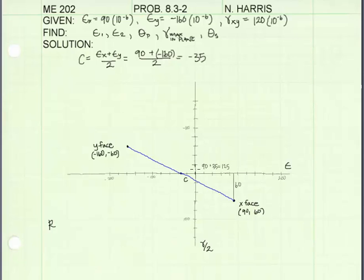Now I'd like to find what the radius of our circle is going to be. And that's the distance from the center point to either the y-face or the x-face. I'm going to choose the x-face. And you can see there's a right triangle here. And I know the two side lengths. This short side is 60. That was gamma xy divided by 2. And the long side is 90. That's epsilon x. Also added to that the distance to the center, 35. So we have a long side dimension of 125. And using the Pythagorean theorem, we can find that the radius is equal to 138.7.